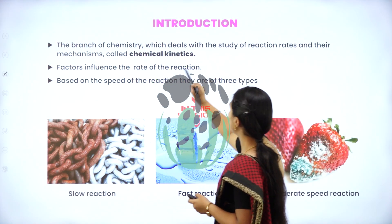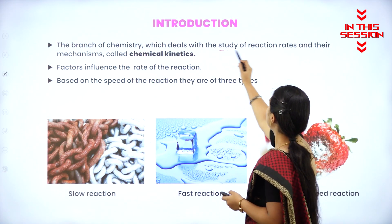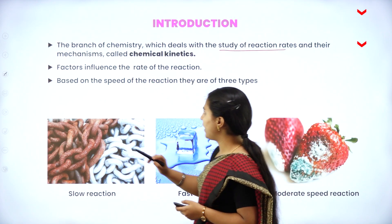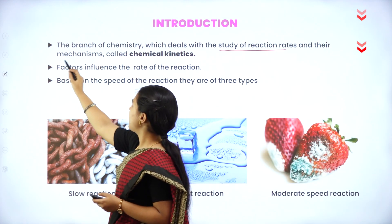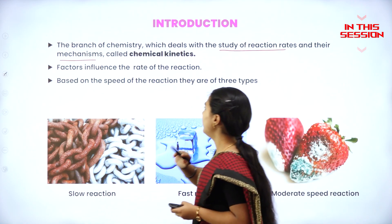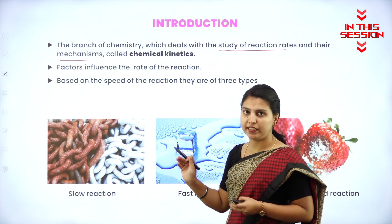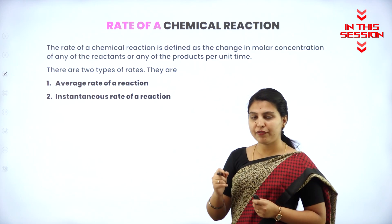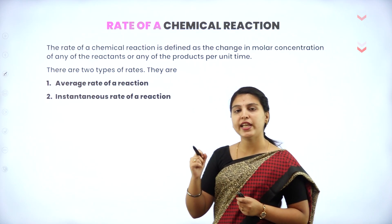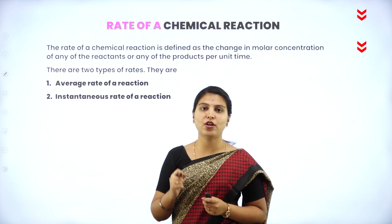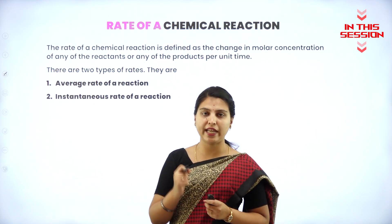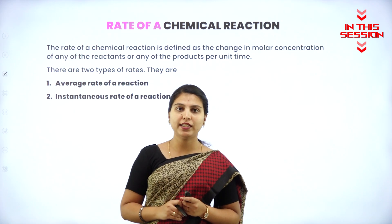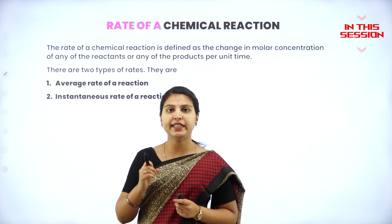The branch of chemistry which deals with the study of reaction rates and their mechanisms is called chemical kinetics. The rate of a reaction is defined as change in molar concentration of reactant or product per unit time.